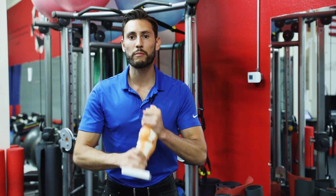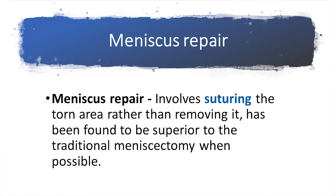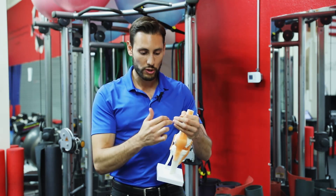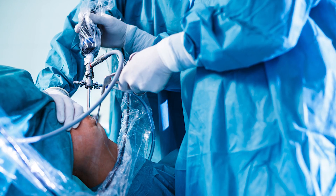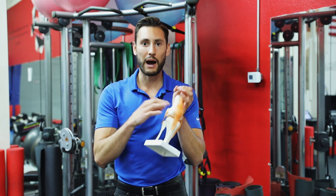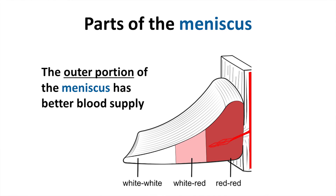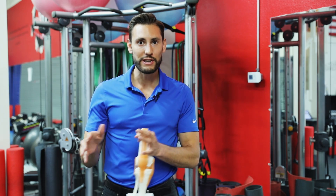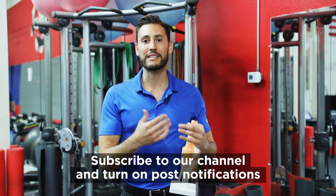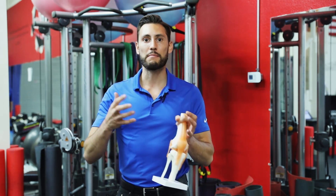One surgery performed for meniscus tears is a meniscus repair. This type of surgery involves suturing the torn piece of the meniscus. If there's a traumatic tear and there's a flap that is torn, the surgeon will suture that together and stitch it up, leaving it in the knee to heal. This surgery can be done when there are tears on the outer portion of the meniscus, because you need good blood supply in that area for it to heal. If it's not in that outer region, then you likely need to cut out that torn area because it's not going to heal — and that's known as a meniscectomy.